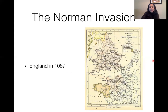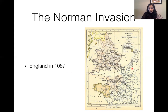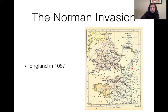Here is England in 1087, just after the Norman Conquest. Again, here is Brittany, here is Normandy, the English Channel, and then England under the domination of William the Conqueror. If you enlarge this you will see that the pink areas are all parts of William the Conqueror's kingdom.